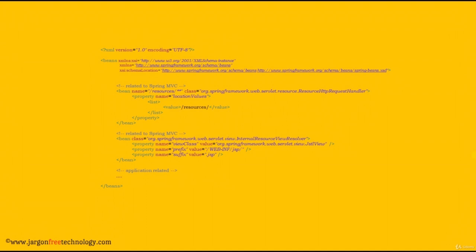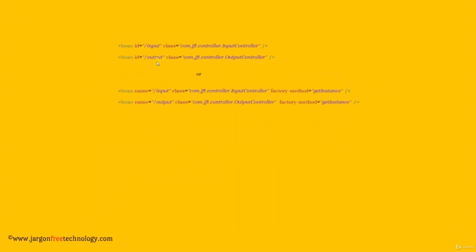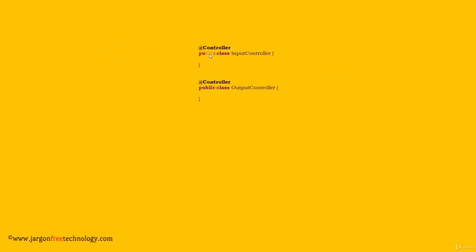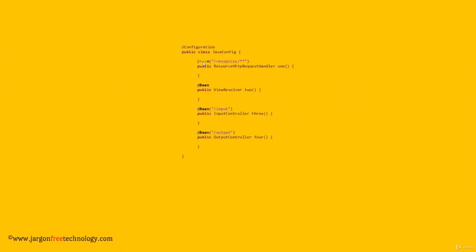Before leaving, let me reiterate what we learned. There are two ways to configure a Spring Container: one using XML, and another one using a Java class. We can create objects using the bean tag, or we can create objects using stereotype annotations — that is @Component, @Controller, @Service, @Repository. And finally, we can create objects using @Bean annotation.